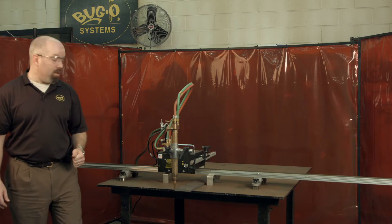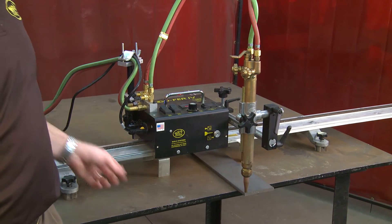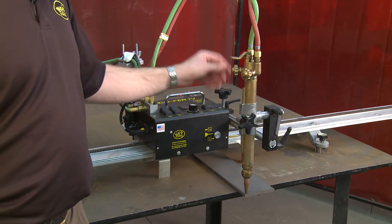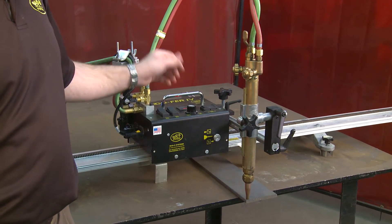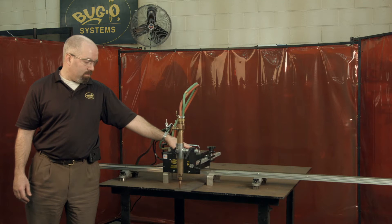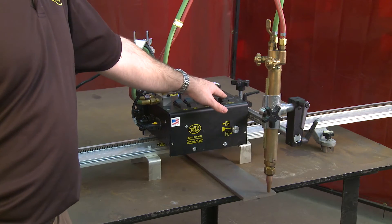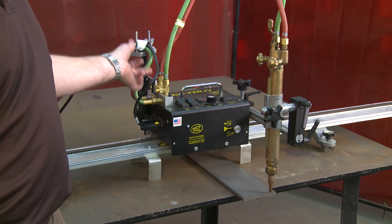When you're ready to actually make your cut, the first thing you would do would be turn on your gas manifold, you would ignite your torch. When you're ready with the preheat, you would fire your cutting oxygen and then you'd turn on your travel. When you're finished, you would simply turn off your travel, shut your gas off.